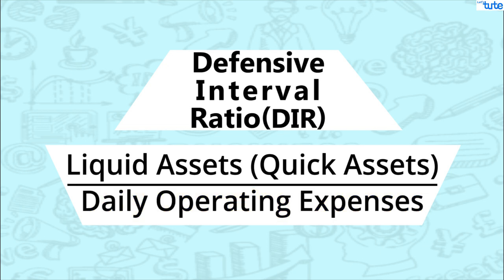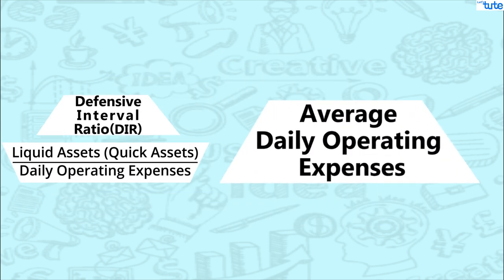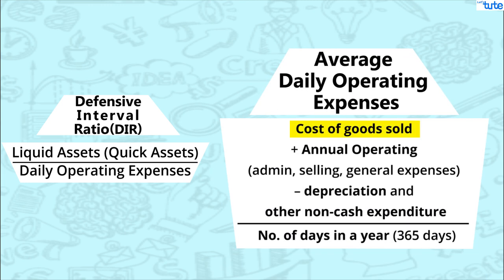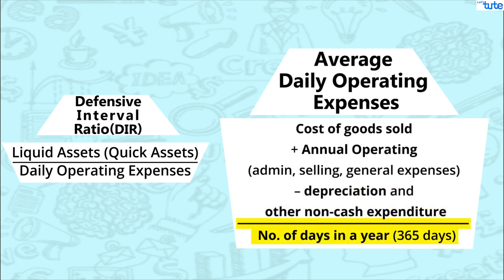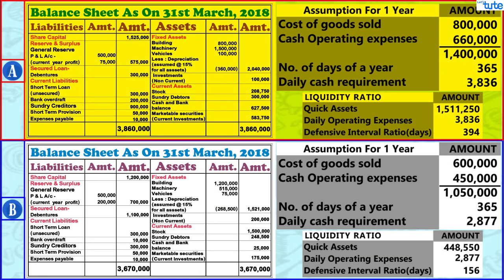Now let's look at the denominator. The easy way to find out average daily operating expenses is to first add cost of goods sold and annual operating expenses, and then deduct depreciation and other non-cash expenditures. Then finally divide the figure by the number of days in a year to find out the average daily expenditure.